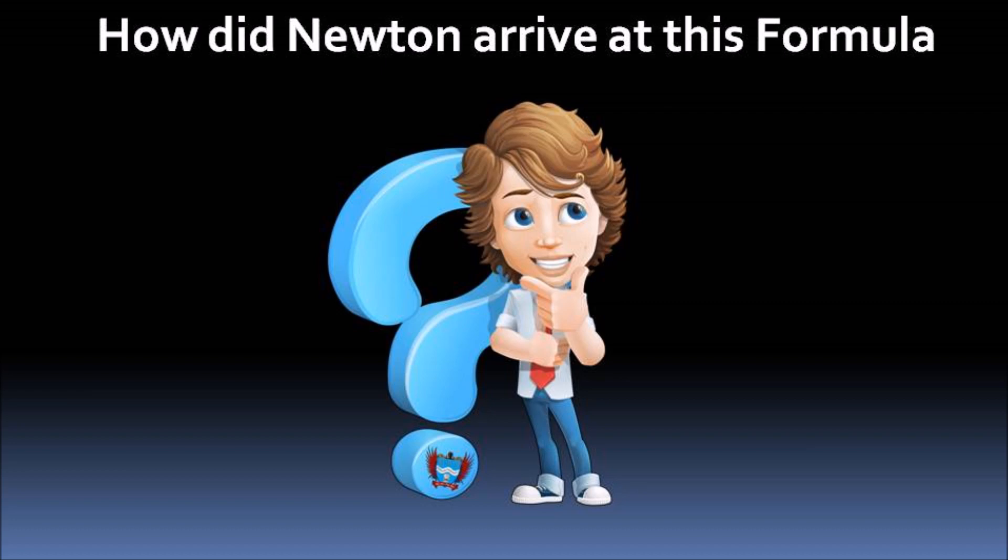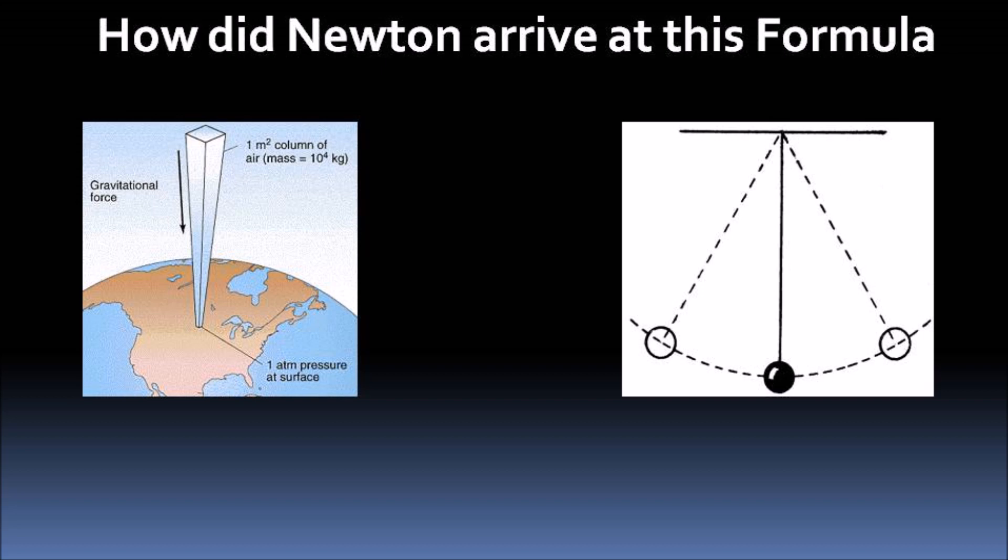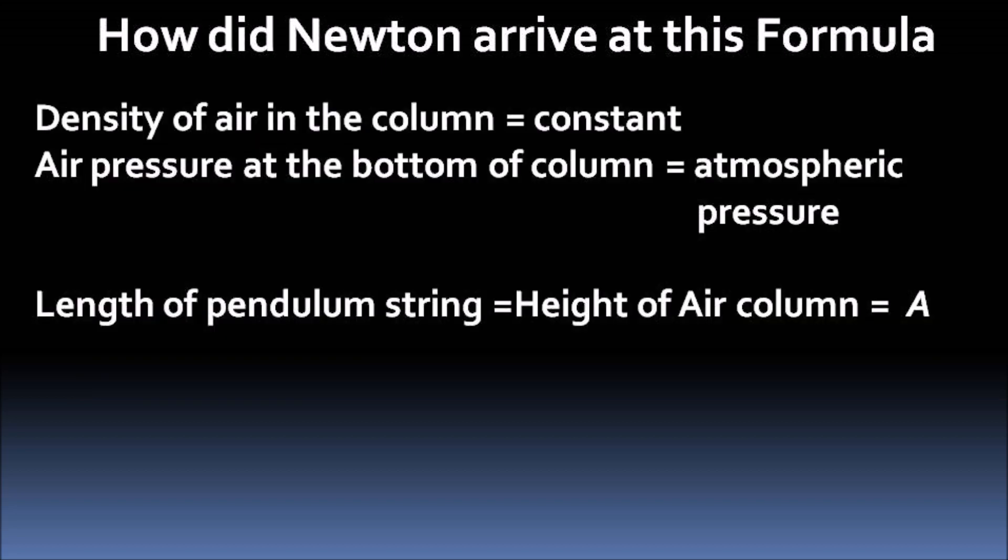I had to go through Principia to find my answer. The explanation given by Newton is not easily understandable. In Proposition 49 of Book 2 of Principia, Newton explains the speed of sound using analogy of an oscillating column of gas and a simple pendulum. Newton assumes a column of air having pressure at the bottom same as the medium of sound wave transport or atmospheric pressure. The density in column is assumed to be constant throughout and equal to the medium of sound wave propagation. The simple pendulum considered has the same length of string as the length of air column.